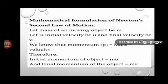Consider an object of mass M moving with an initial velocity U. After some time, its velocity changes to V. The initial momentum is M×U and the final momentum is M×V.